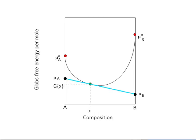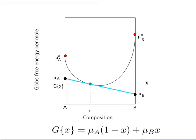We need to express that in thermodynamics. Imagine you have a free energy curve for one of the phases - alpha or gamma - with a particular composition x here. We draw a tangent and label these points as μ°_A and μ°_B, and the intercepts as μ_B and μ_A; this is the free energy of an alloy of composition x. We can write an equation for this straight line: G(x) = μ_A(1 - x) + μ_B·x, where (1-x) is the concentration of A and x is the concentration of B.